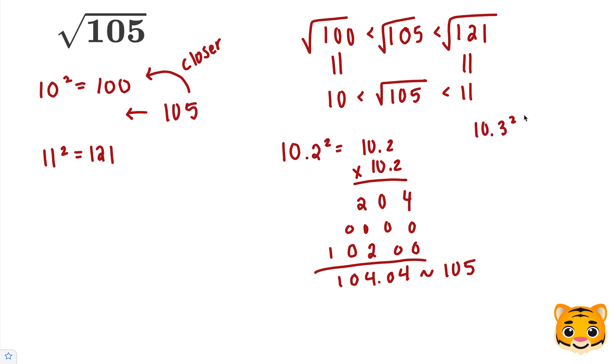If we try out 10.3 squared, let's see if we can get even closer to 105. 3 times 3 is 9, 0 times 3 is 0, and then 1 times 3 is 3. Add 0's for the next row, and then 2 0's as the placeholders, and multiply our 1.